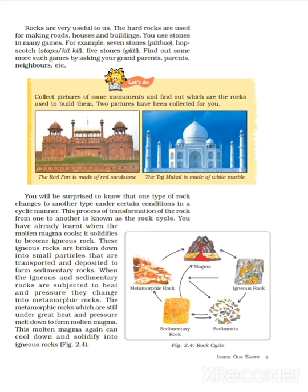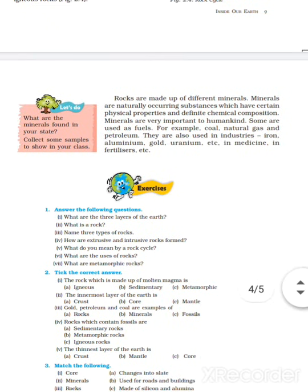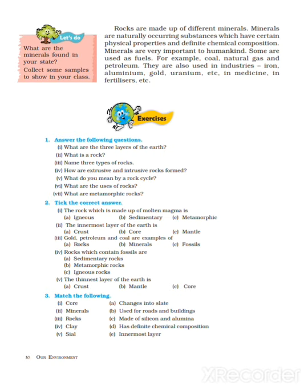Minerals are naturally occurring substances which have certain physical properties and a definite chemical composition. Minerals are very important to humankind. Some are used as fuel, like coal, natural gas, and petroleum. Others are used in industries — iron, aluminum, gold, uranium — and in medicine and fertilizers.